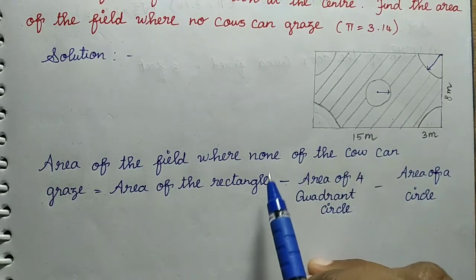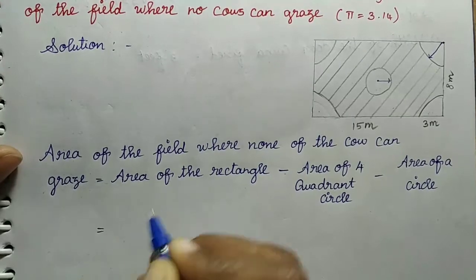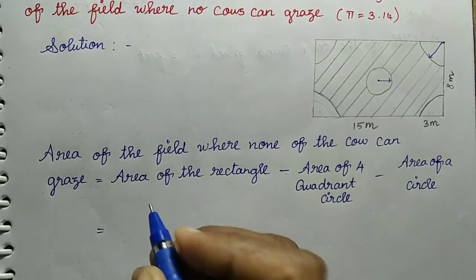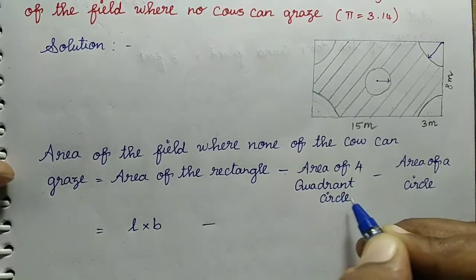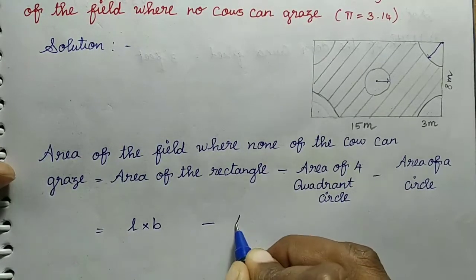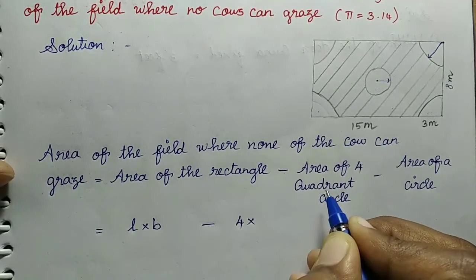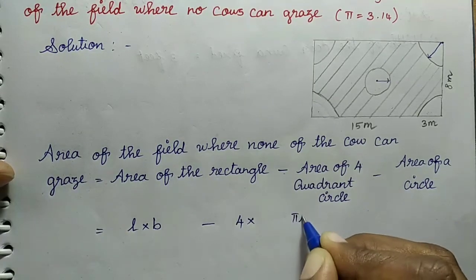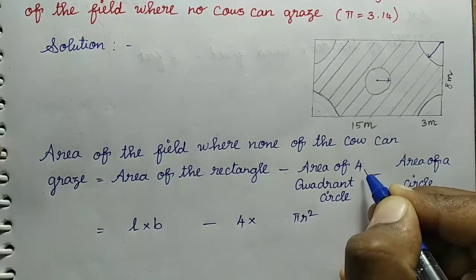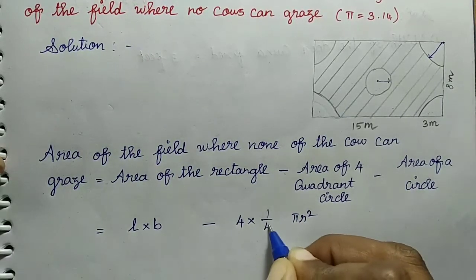Area of the rectangle minus area of four quadrant circles minus area of the circle. The formula is l × b minus 4 × (1/4) × πr² minus πr².